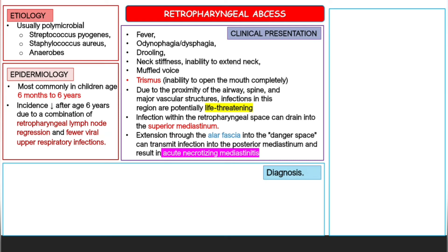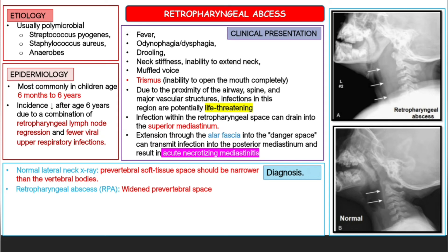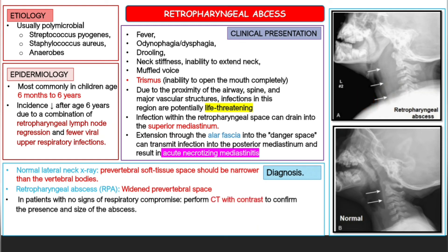For diagnosis, a lateral neck X-ray is used. On a normal X-ray, the prevertebral soft tissue space should be narrower than the vertebral bodies. In a retropharyngeal abscess, this prevertebral space is widened. In patients with no signs of respiratory compromise, CT with contrast is performed to confirm the presence and size of the abscess. Early diagnosis and treatment are essential, as complications include airway compromise, bacteremia, carotid artery rupture, and jugular venous thrombosis.